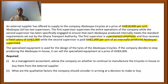The specialized equipment is used for the design of the tiles of the Abubo Yar tricycles. If the company decides to stop producing the Abubo Yar in-house, it can sell the specialized equipment at a price of 4,000 Ghana cedis. As a management accountant, advise the company on whether to continue to manufacture the tricycles in-house or buy them from the external supplier. Also, what are the qualitative factors the company should consider in arriving at a make-or-buy decision?